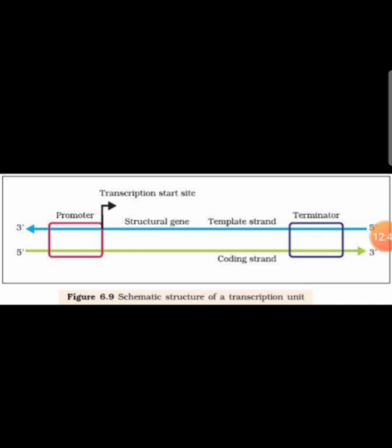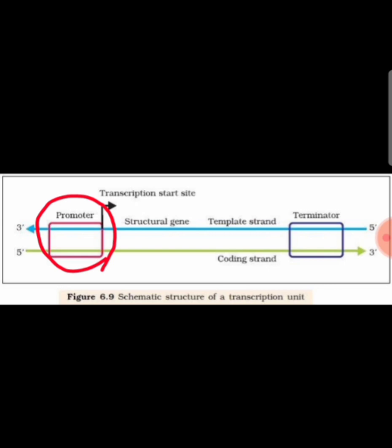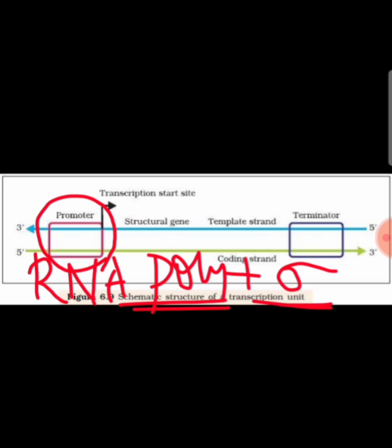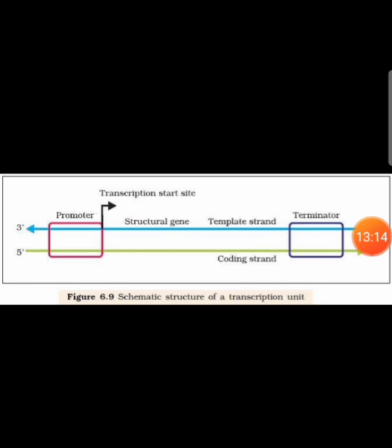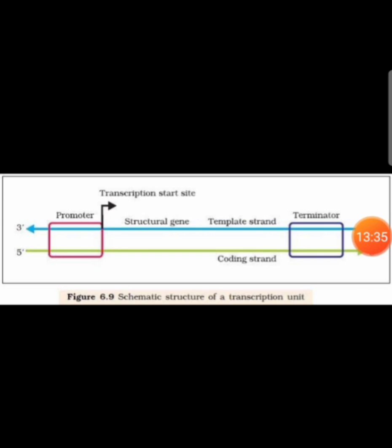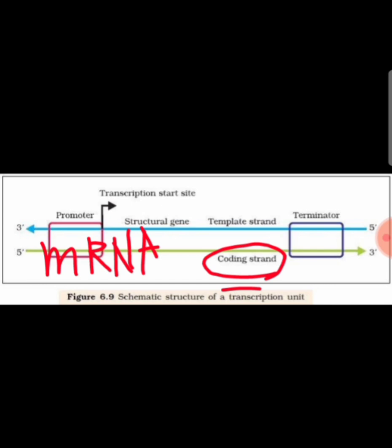Here you can find the structure of a transcription unit. At the promoter region, the enzyme RNA polymerase and a factor called sigma factor attach, which helps in the transcription of DNA to RNA. The mRNA is complementary to the template strand. At the terminator site, due to the binding of the rho factor, transcription is terminated. The mRNA obtained after transcription is exactly similar to the coding strand, except wherever there is thymine in the coding strand, in mRNA you find uracil.